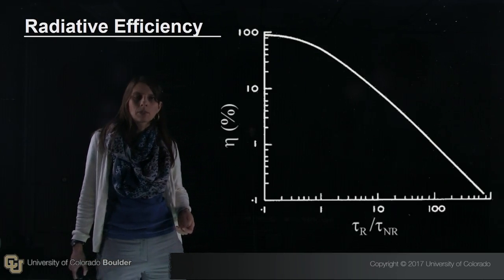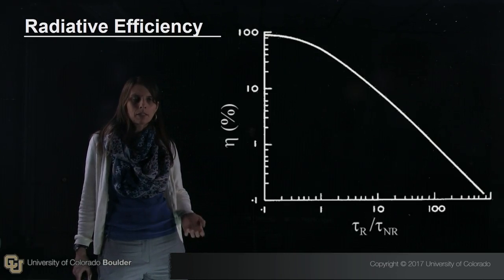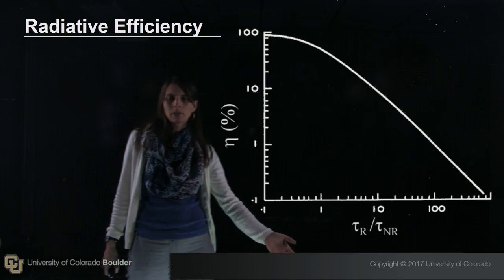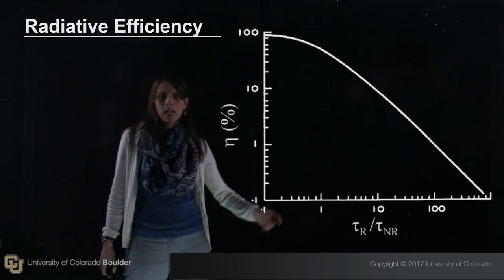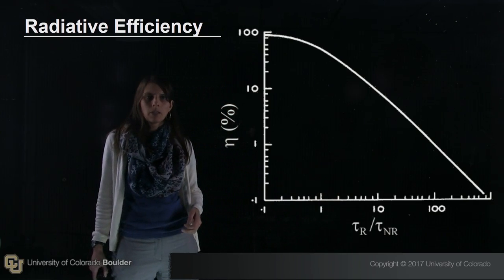Finally, the last topic is radiative efficiency. When carriers recombine, they can either recombine radiatively, which is represented by tau_r, the radiative lifetime for a carrier, or tau_nr, which is non-radiative recombination.